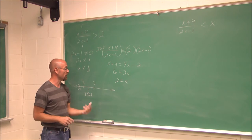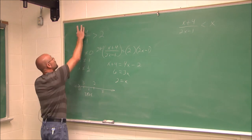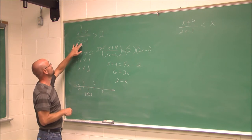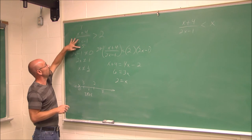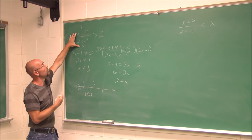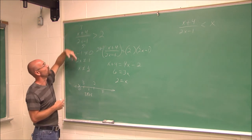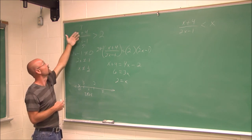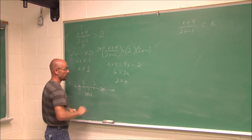Let's choose 3 as my test point for the interval greater than 2. If I plug that in, 3 plus 4 is 7. 3 times 2 is 6, minus 1 is 5. So I get 7 divided by 5, which is 7/5 or 1.4. 1.4 is not greater than 2. Or maybe you just recognize that 7 over 5 is less than 2, since 10 over 5 would be 2 and this is less than that. So this is a false statement.